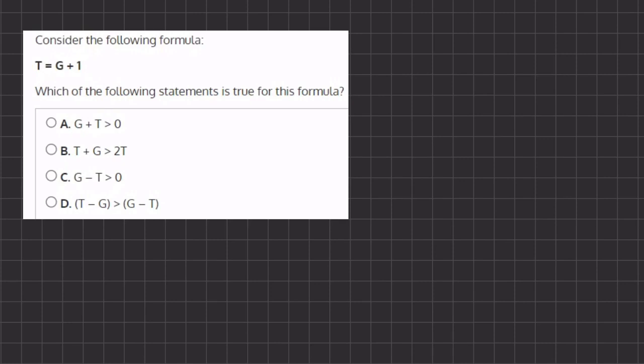All right, so now let's go to option A: G plus T is greater than zero. So let's do what we just said. Instead of T, we are going to write G plus one is greater than zero. Now, if we simplify this, we get 2G plus one is greater than zero.